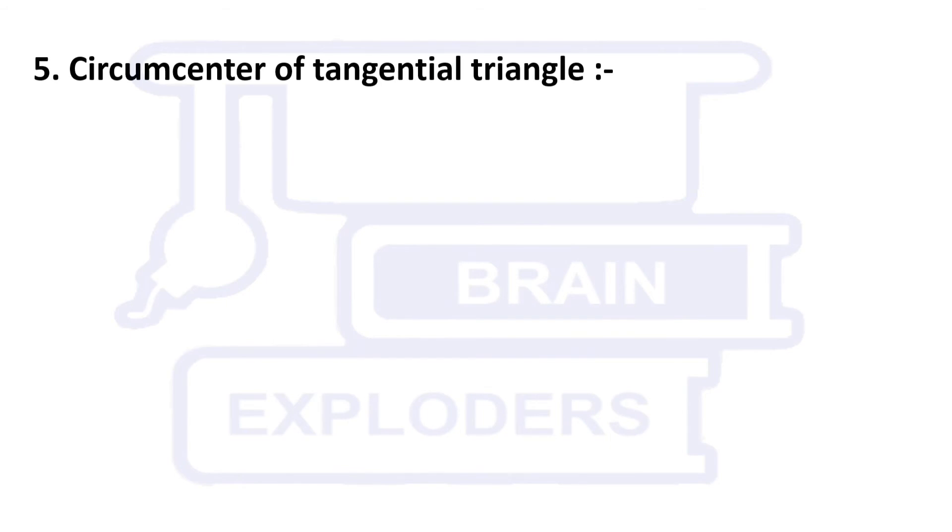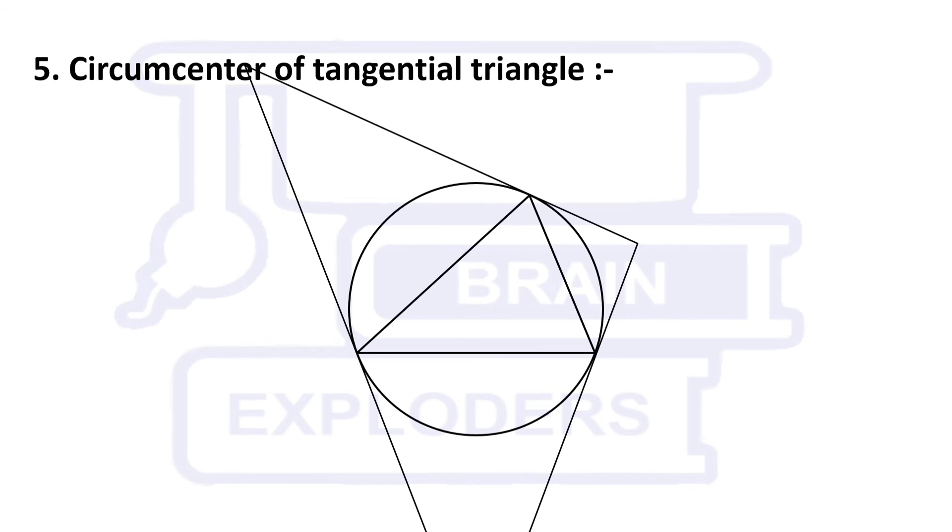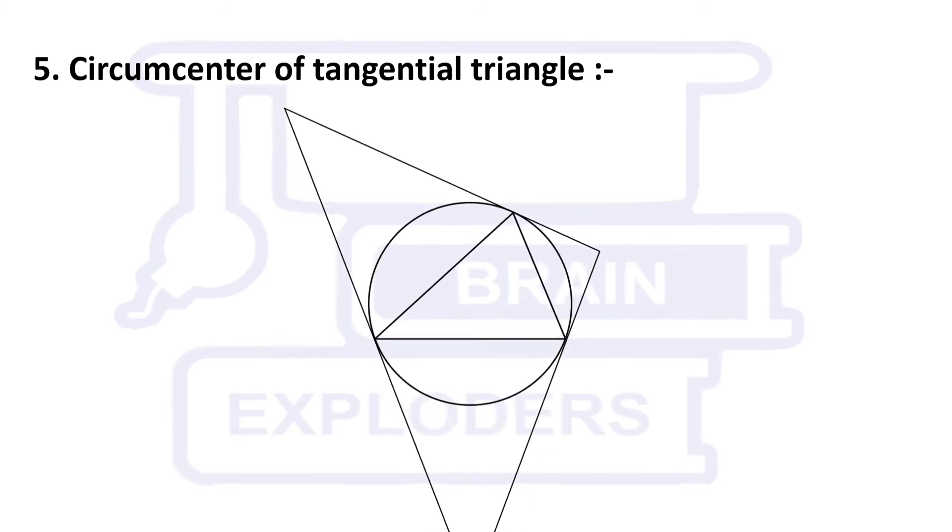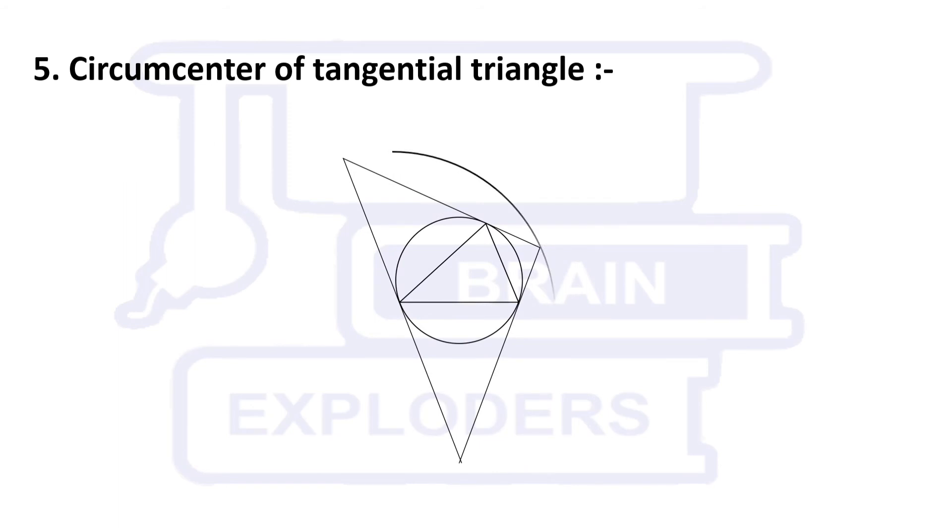Circumcenter of Tangential Triangle. Draw the tangents on the circumcircle which pass through the vertices of the triangle. The triangle formed by the tangents is called Tangential Triangle of the original triangle.